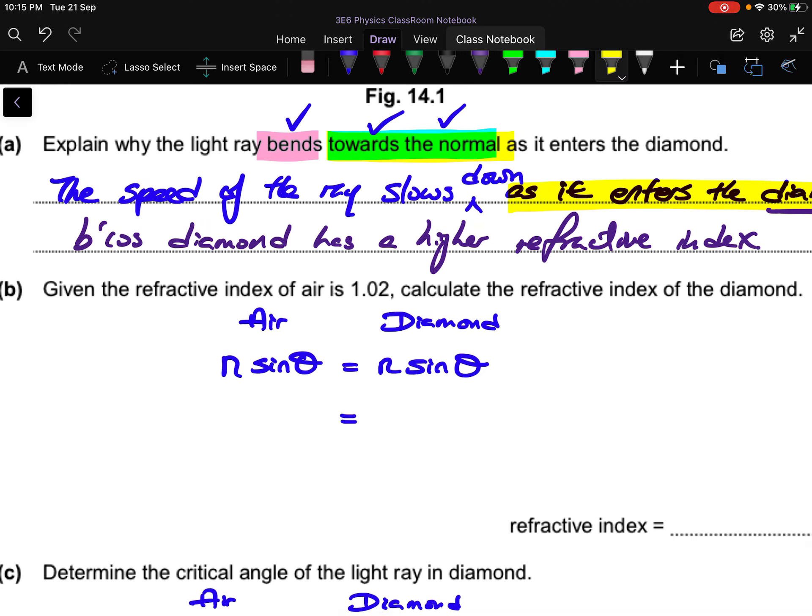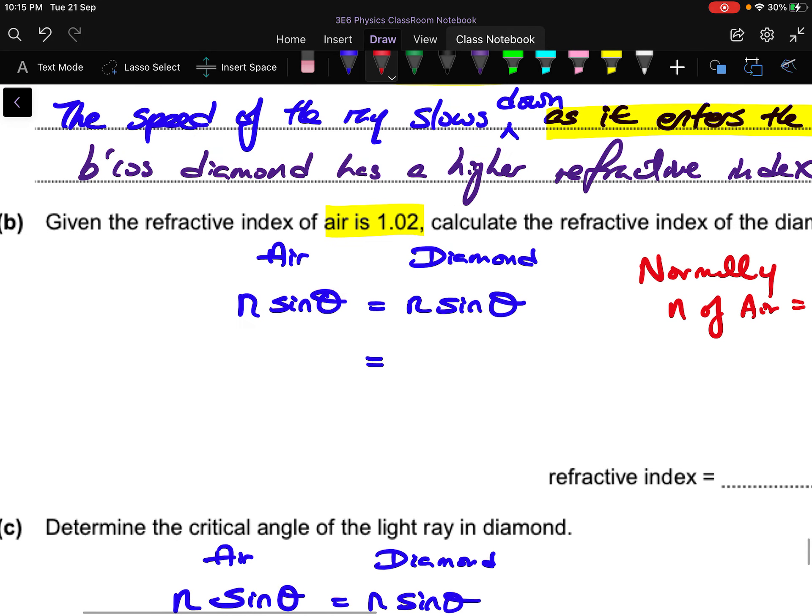For part B, you are given the refractive index of air as 1.02. So please use it. Normally, we won't expect you to give me 1.02. You can use 1.02. I repeat. Normally, if they didn't say anything, n of air is 1. So now, how do you use Snell's law? If you forget how to use Snell's law, this is a revision for you.